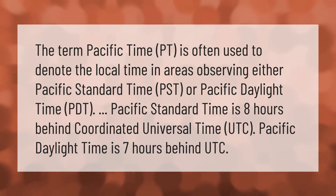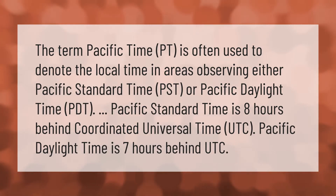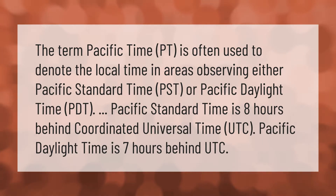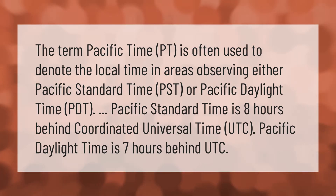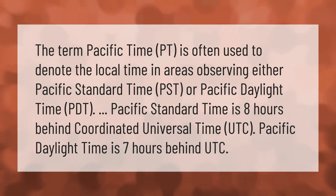The term Pacific Time, PT, is often used to denote the local time in areas observing either Pacific Standard Time, PST, or Pacific Daylight Time, PDT. Pacific Standard Time is eight hours behind Coordinated Universal Time, UTC. Pacific Daylight Time is seven hours behind UTC.